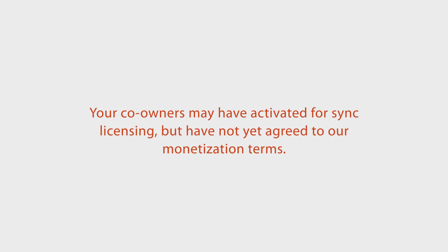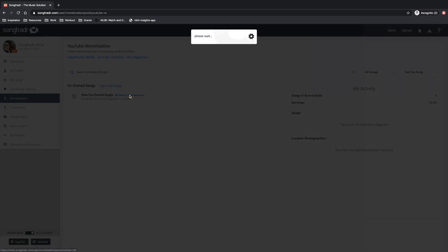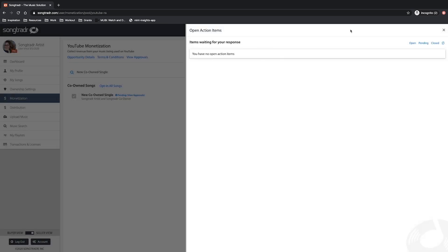Your co-owners may have activated for sync licensing, but have not yet agreed to our monetization terms. If you're wondering which co-owners are needed to activate, the view approvals link will indicate which songs are yet to be approved.